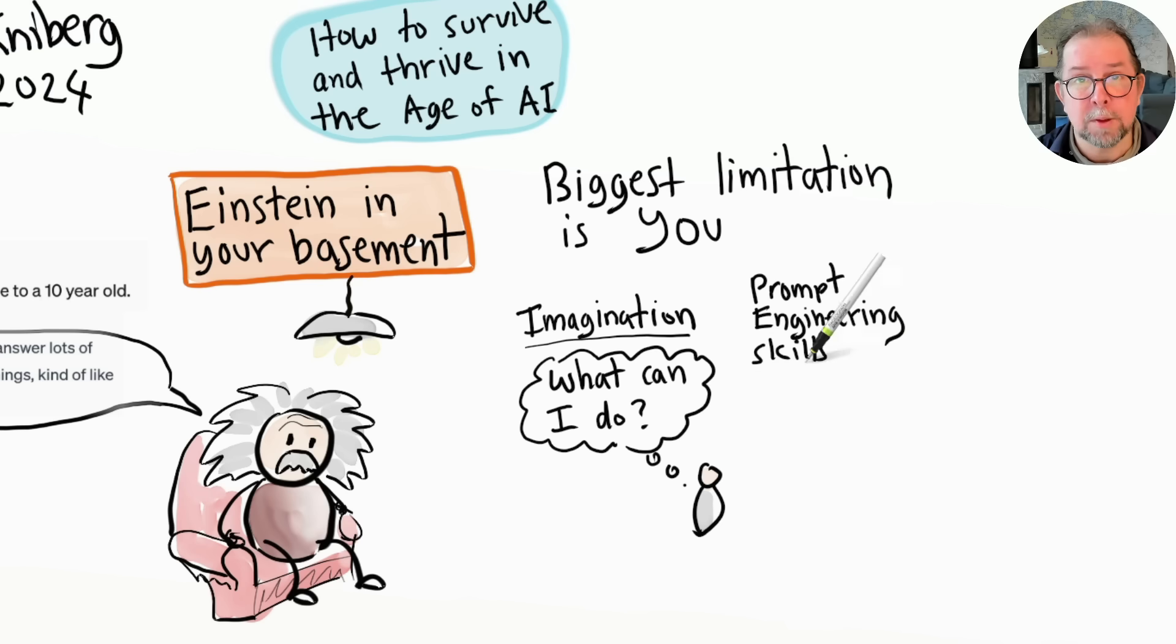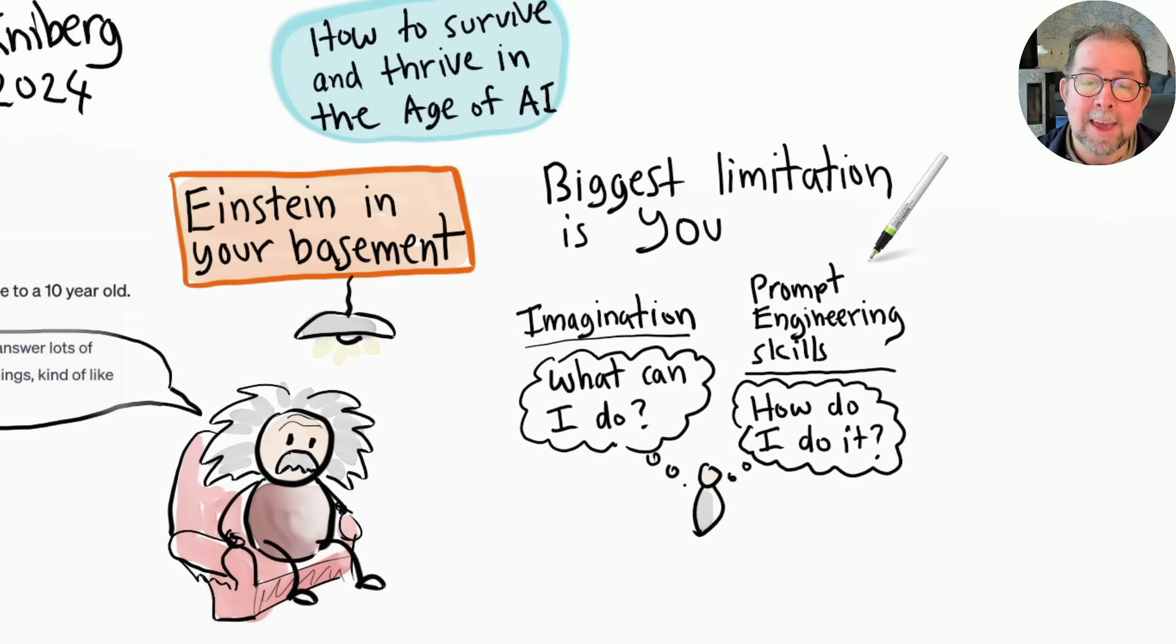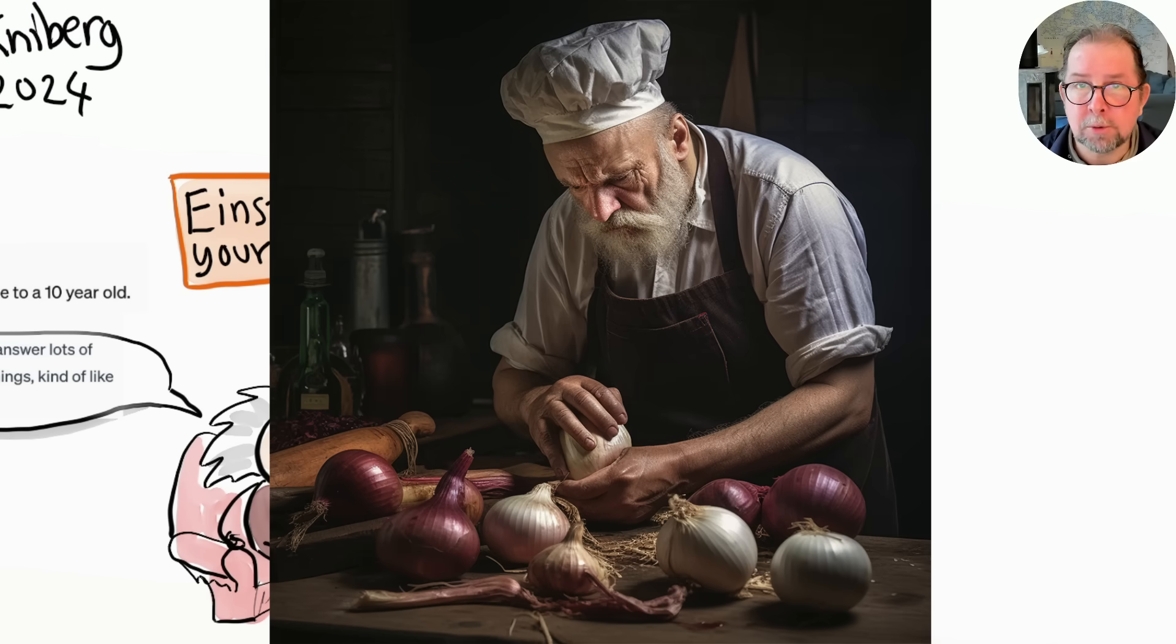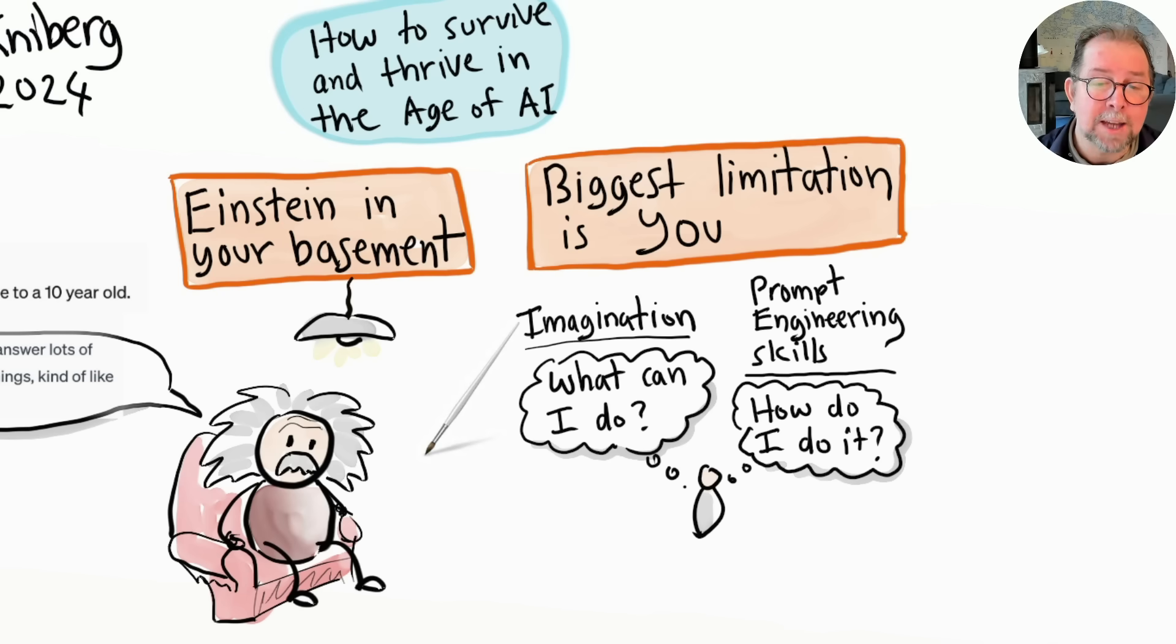This skill is known as prompt engineering, and in the age of AI this is as essential as reading and writing. Most people vastly underestimate what this Einstein in your basement can do. It's like going to the real Einstein and asking him to proofread a high school report, or hiring a world-class five-star chef and having him chop onions. The more you interact with Einstein, the more you will discover surprising and powerful ways for him to help you or your company.